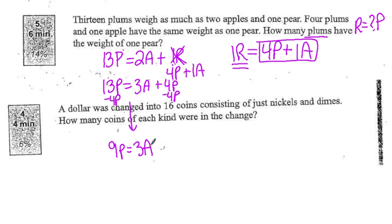So if I divide both of these by 3, then we get 3p equals 1 apple. So I know that 1 apple is the same as 3 plums.